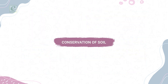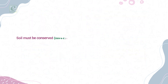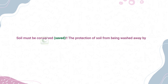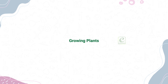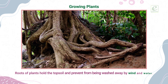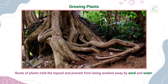Conservation of Soil. Soil must be conserved. The protection of soil from being washed away by eroding agents like wind and water is called soil conservation. We can conserve soil by the following ways. Growing plants — roots of plants hold the top soil and prevent it from being washed away by wind and water.